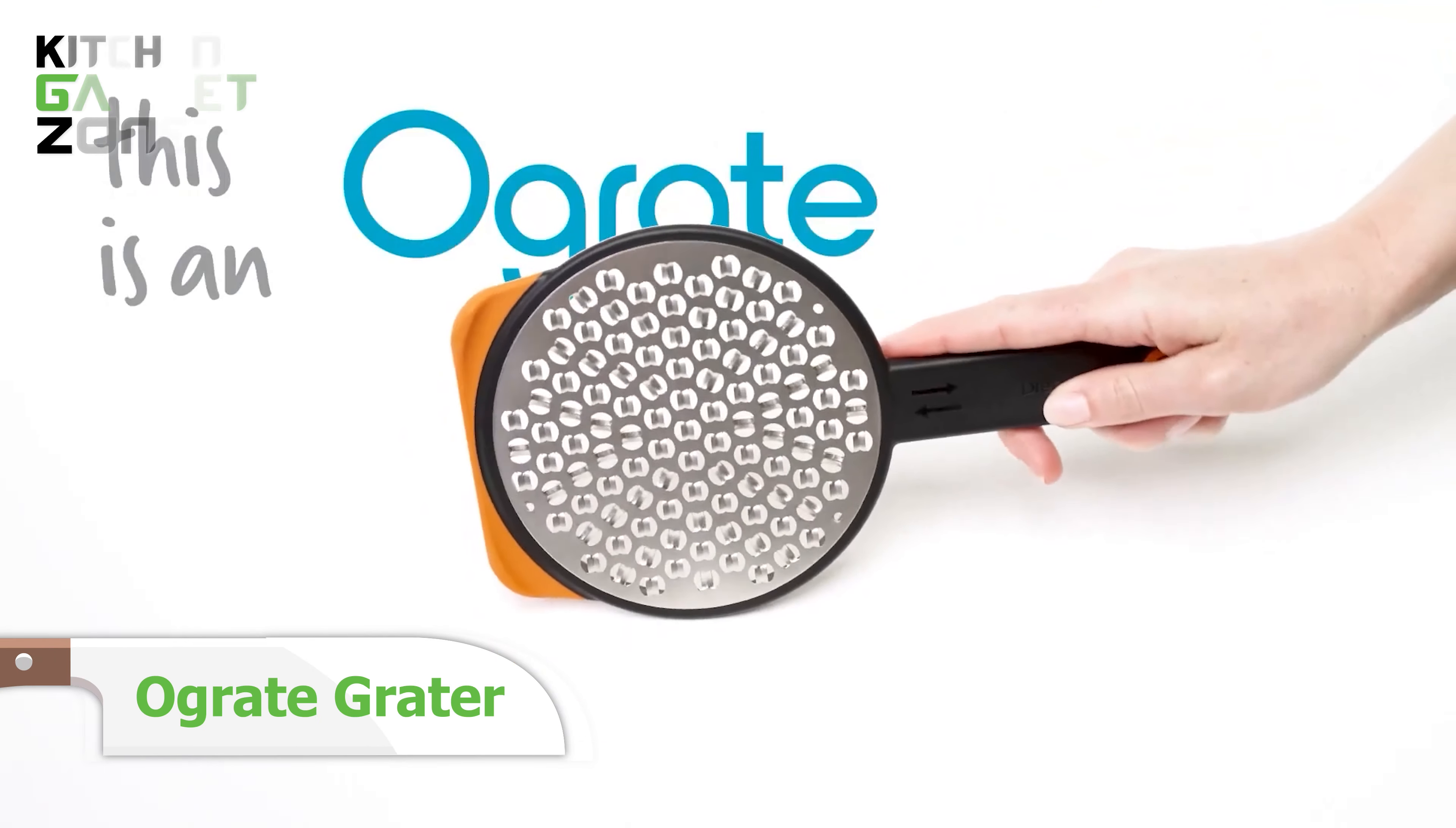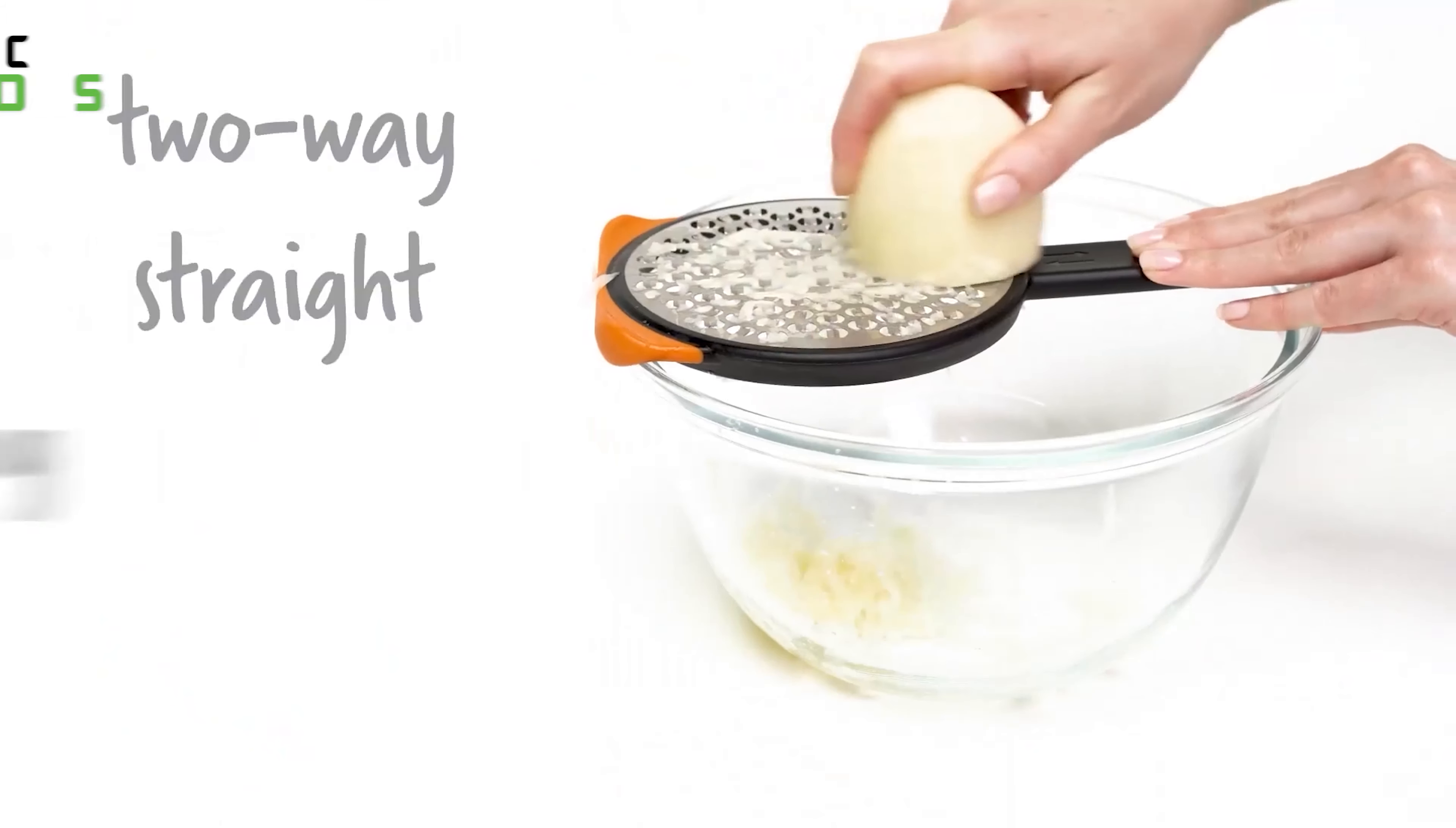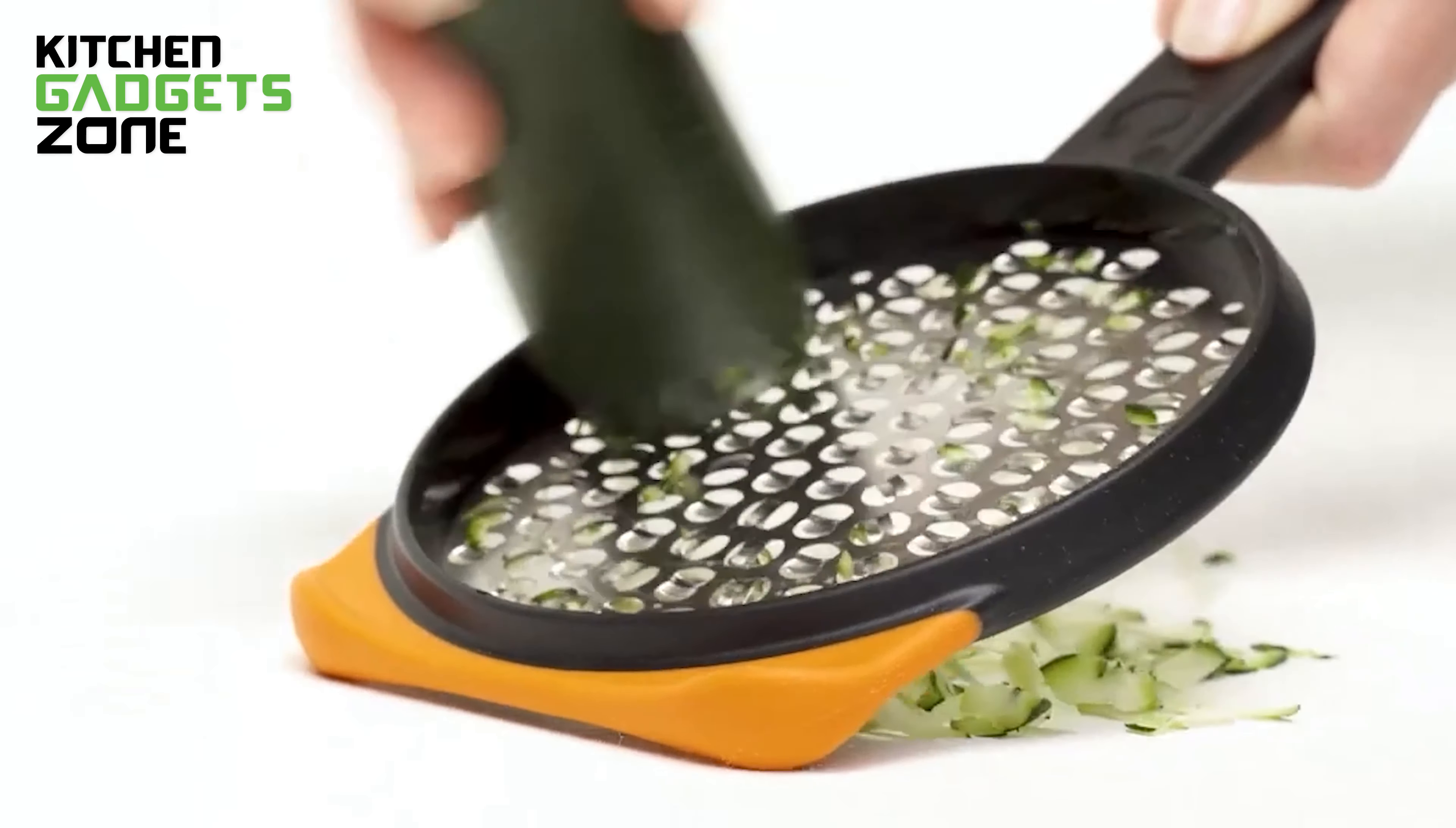Grating has never been so gratifying with the O-Grate Grater. This two-sided wonder is a must-have for any kitchen. On one side, the circular blades make quick work of grating carrots, zucchini, and more, with a handy guide rim for easy grating in either direction. Flip it over, and you'll find an extra-wide plane perfect for efficiently grating large foods like cheese. No more awkward hand cramps.